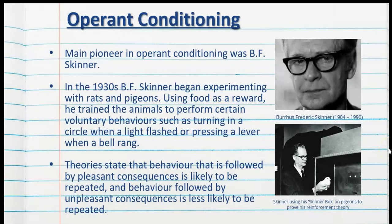The main pioneer in operant conditioning was B.F. Skinner. In the 1930s, Skinner began experimenting with rats and pigeons. Using food as a reward or reinforcer, he trained the animals to perform certain voluntary behaviors such as turning in a circle when a light flashed or pressing a lever when a bell rang. Theories state that behavior followed by pleasant consequences is likely to be repeated, and behavior followed by unpleasant consequences is less likely to be repeated. It was Skinner that proved this in an experimental setting.